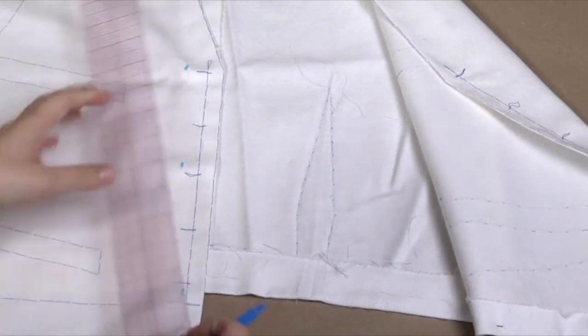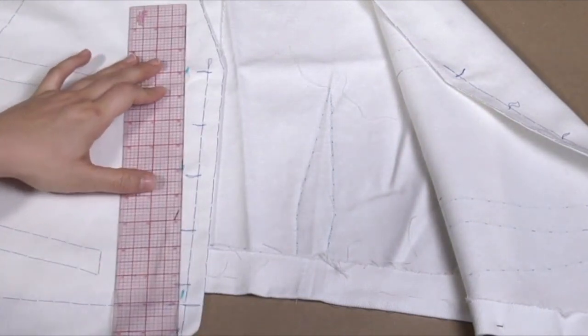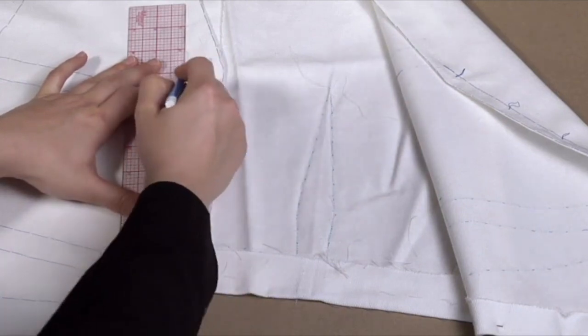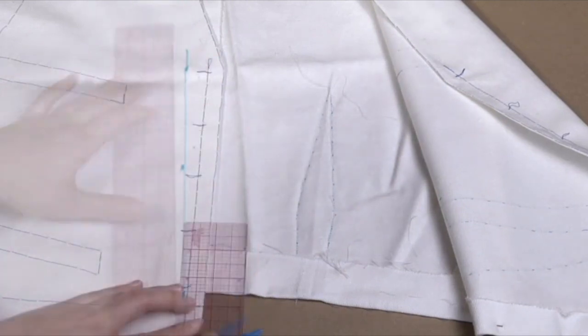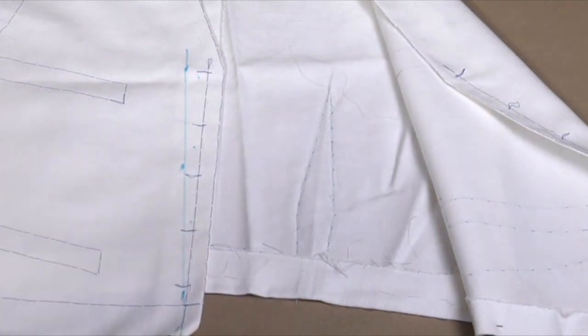When your center front line changes, you'll mark the pins on the right side of the vest. Connect these points with a straight line. Your new center front line will be balanced between these two lines and becomes the new straight of grain.